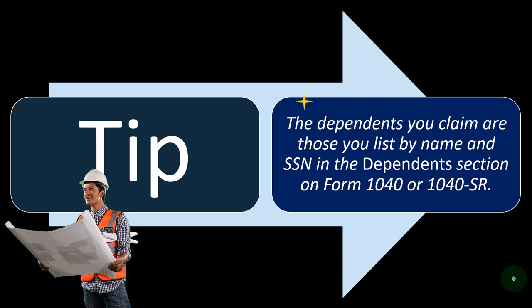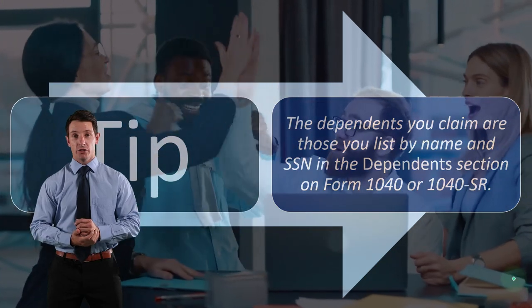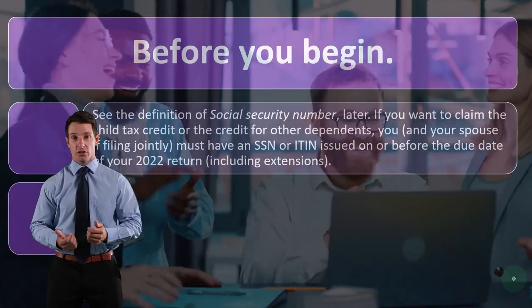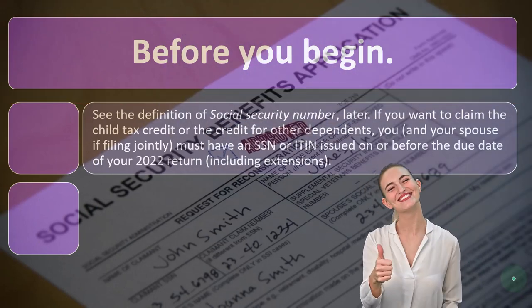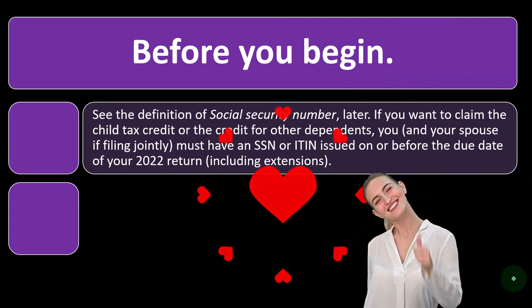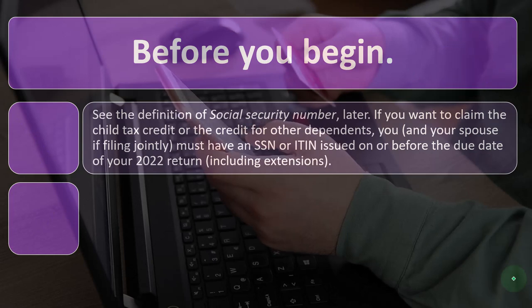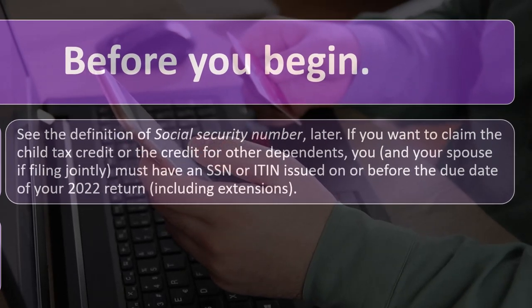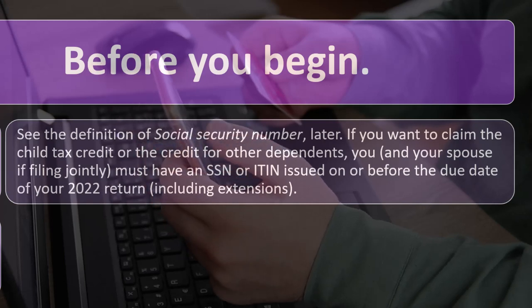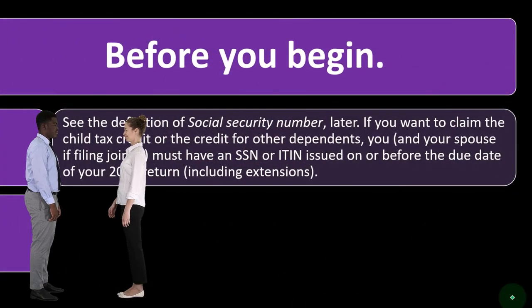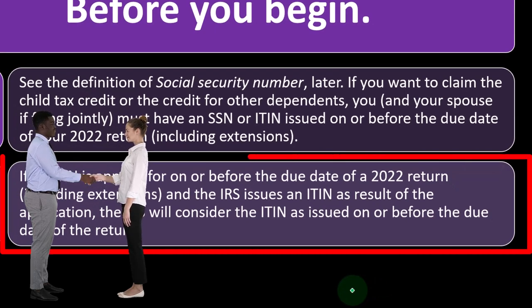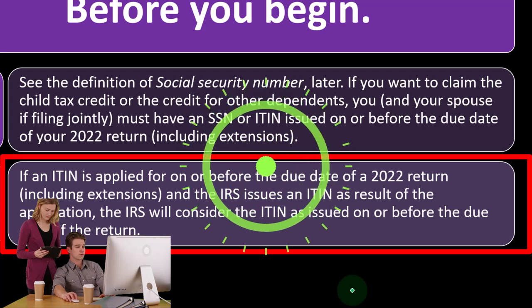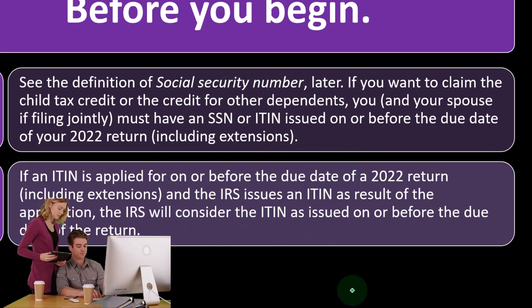Sometimes you won't even be able to file the return if you're trying to electronically file and someone else has already claimed them as a dependent using that name and social security number. If you want to claim the child tax credit or the credit for other dependents, you and your spouse if filing jointly must have an SSN or ITIN issued on or before the due date of your 2022 return, including extensions. If an ITIN is applied for on or before the due date and the IRS issues one as a result, the IRS will consider it as issued on or before the due date.